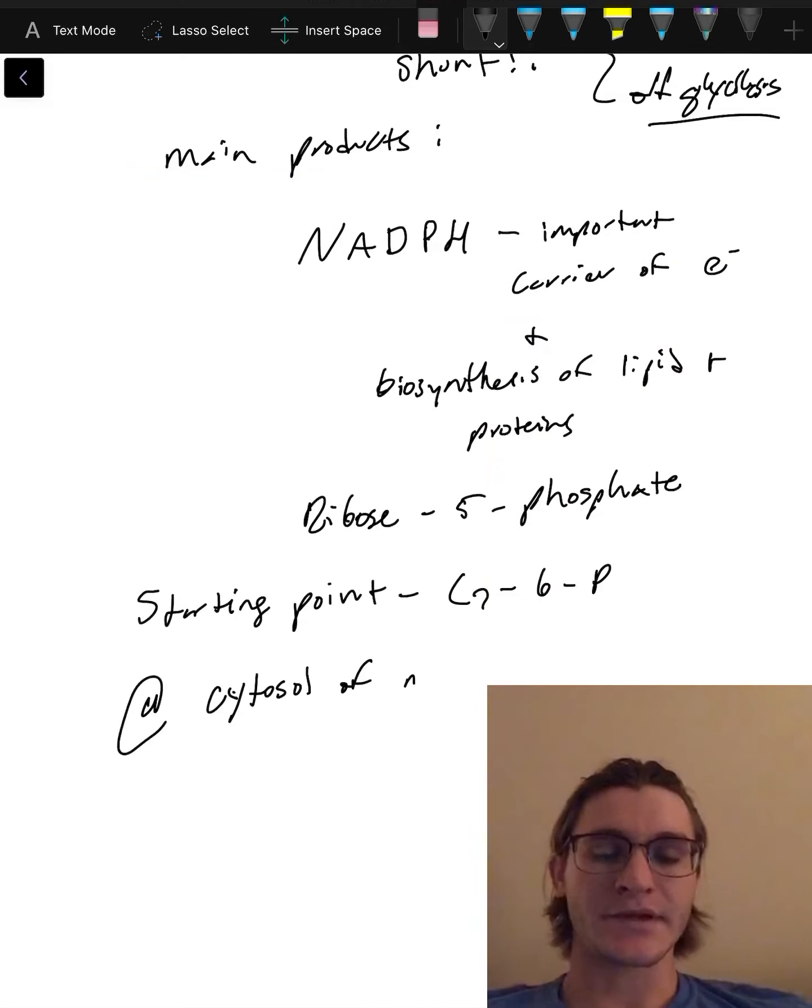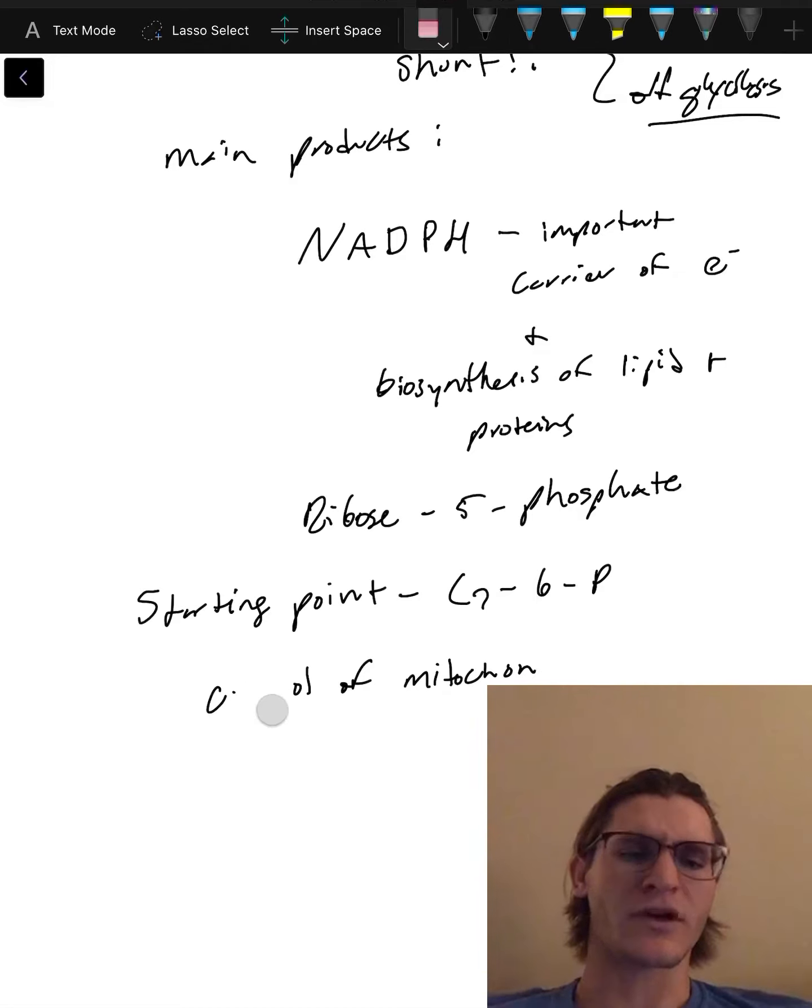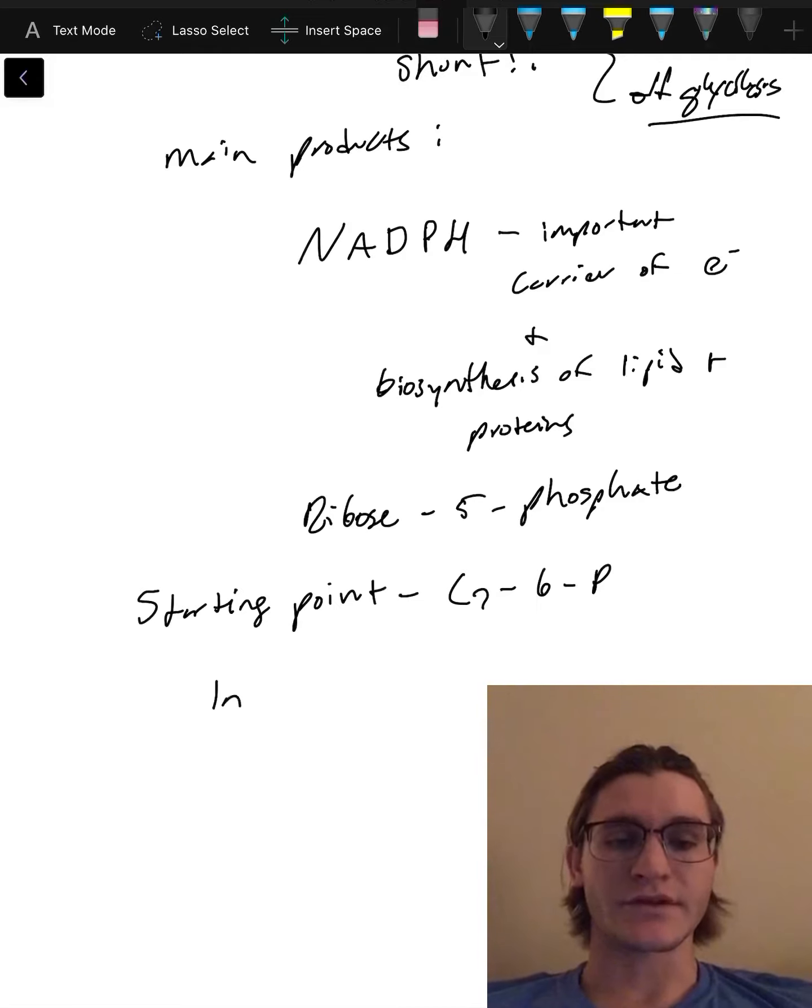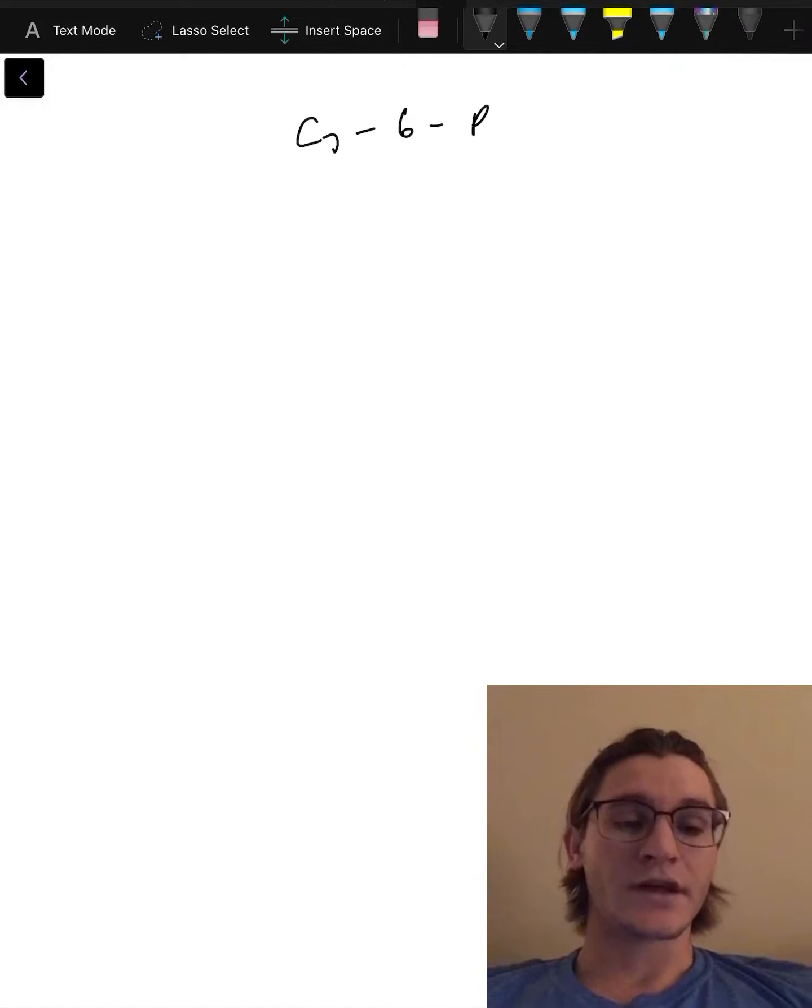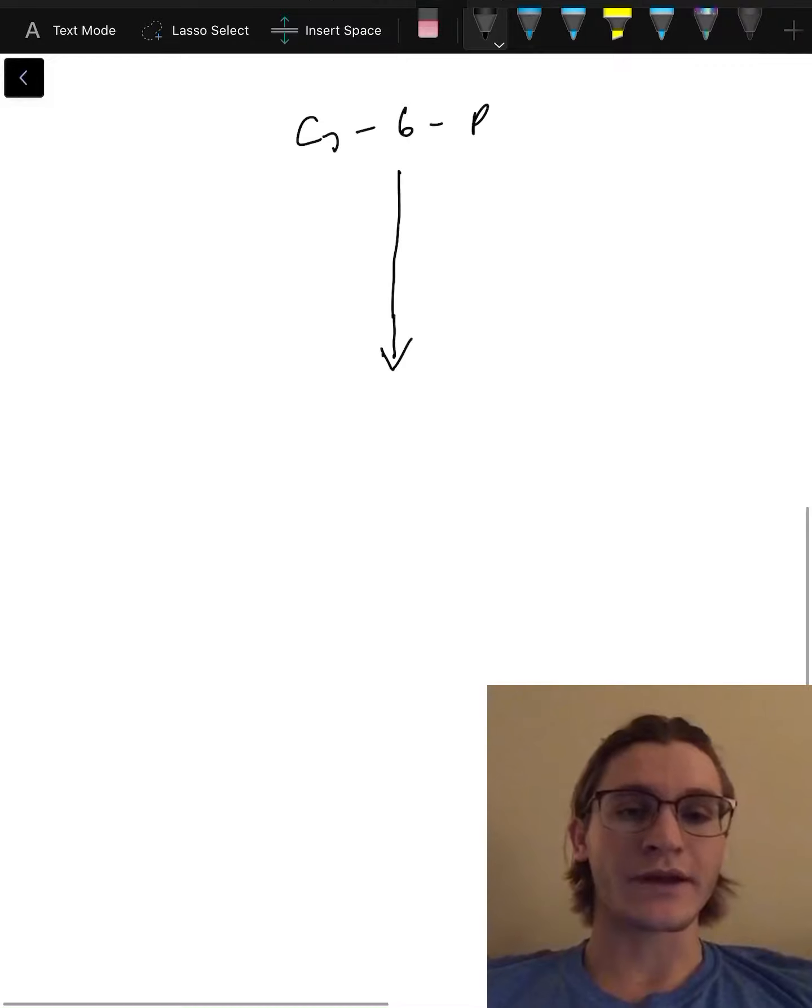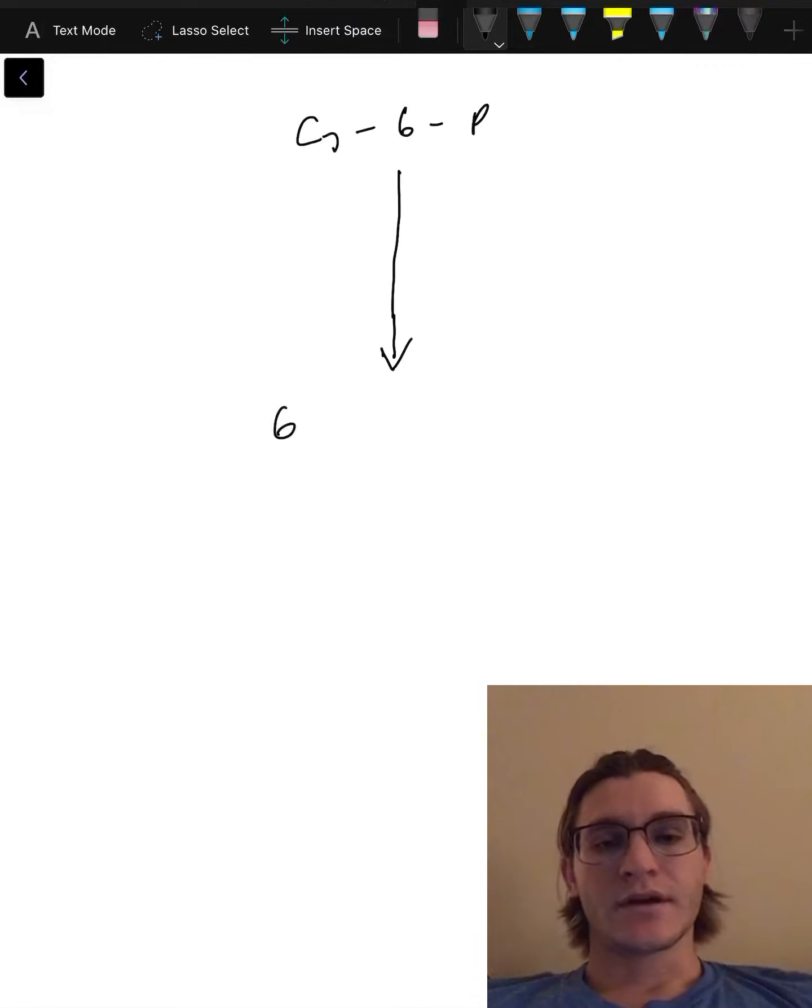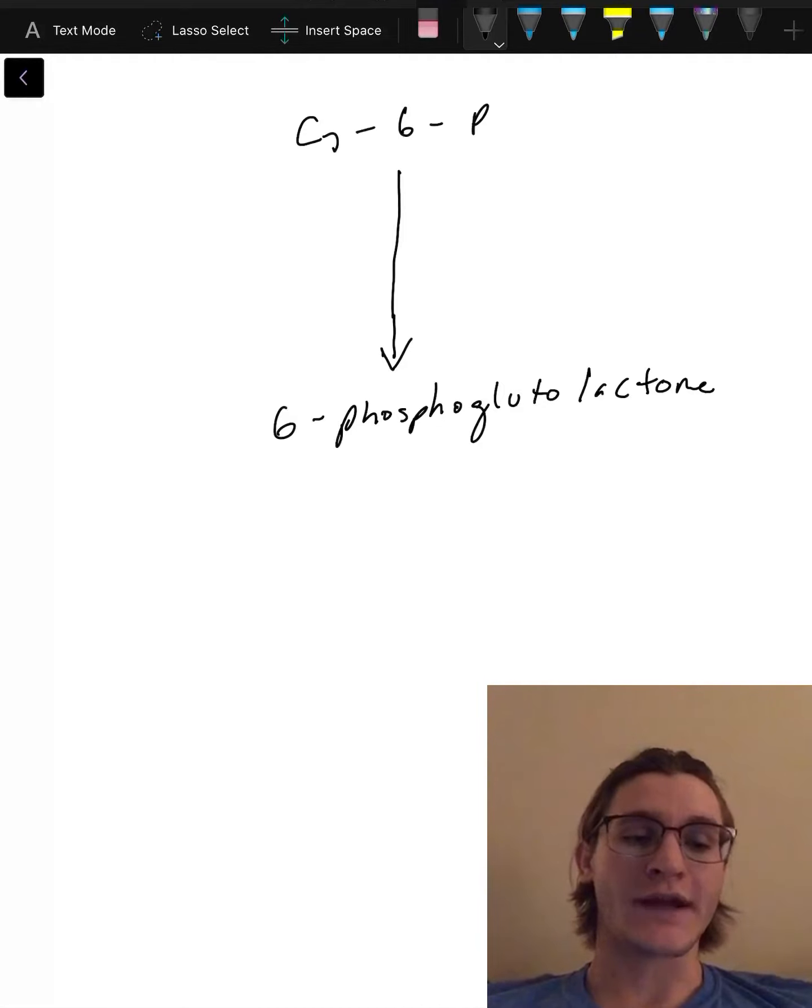It happens in the cytosol of the cell. So let's begin. We need glucose 6-phosphate, and that's the beginning of our shunt. It's off glycolysis, so we are no longer going through glycolysis, and we're gonna create 6-phosphoglutolactone.